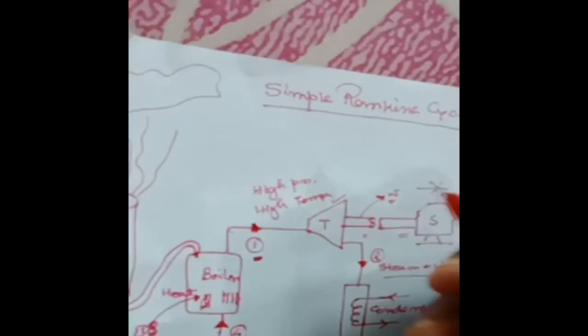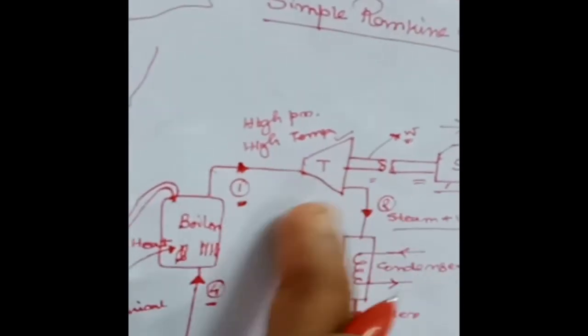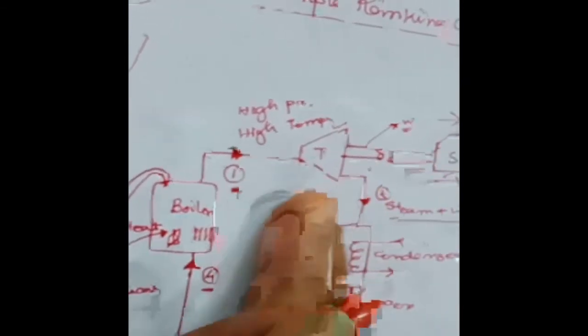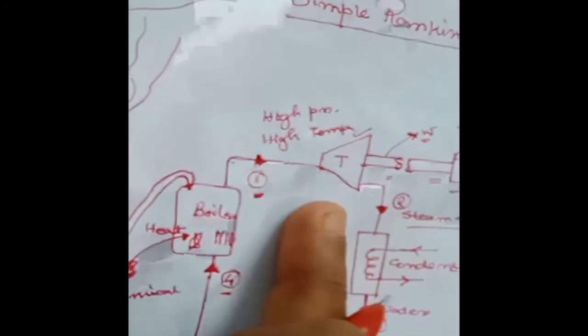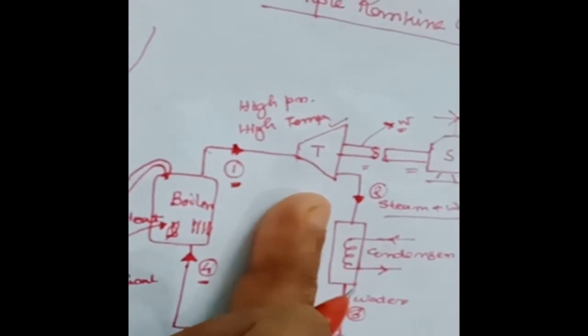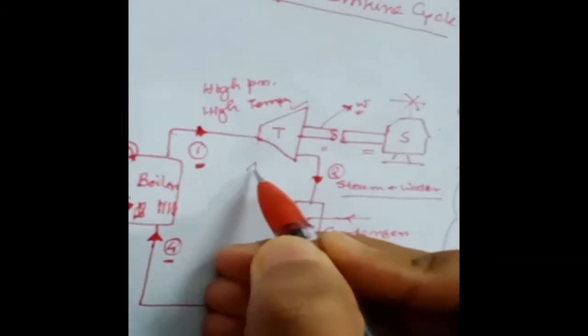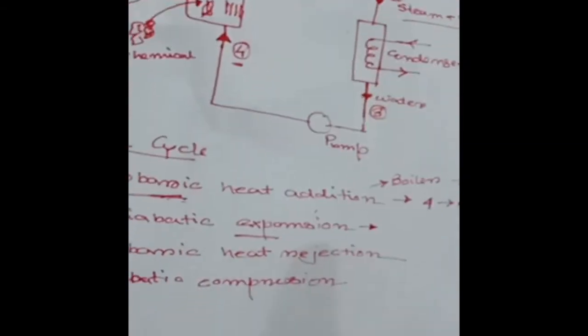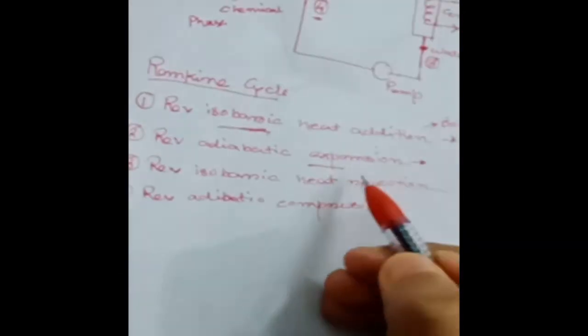Reversible adiabatic expansion: after leaving the boiler, it goes to the turbine. In the turbine, expansion takes place, and because of this expansion the pressure decreases as well as the temperature decreases. This process takes place adiabatically — meaning no heat transfer, delta Q equals zero. The expansion process is step one to two.